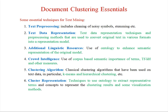There are some essential techniques for text mining. First is text preprocessing, where we generally remove noisy symbols, trace the data, filter sentences, and separately identify sentences in the document. Second is text data representation techniques. Third is the use of ontology to enhance the semantic representation. Fourth is crowd intelligence, which involves purpose-based semantic importance of terms, TF-IDF, and other measures.